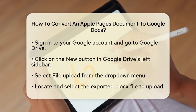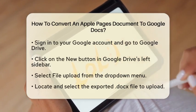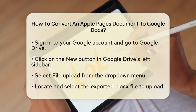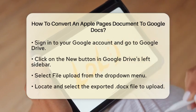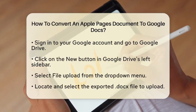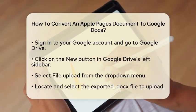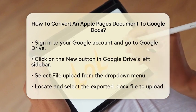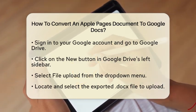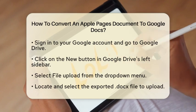After you have exported your document, it is time to move on to Google Drive. Sign in to your Google account and navigate to Google Drive by typing drive.google.com in your web browser. Once you are in Google Drive, look for the New button on the left sidebar. Click on it, and from the drop-down menu, choose File Upload. Now find the Docx file that you just exported from Apple Pages and select it.